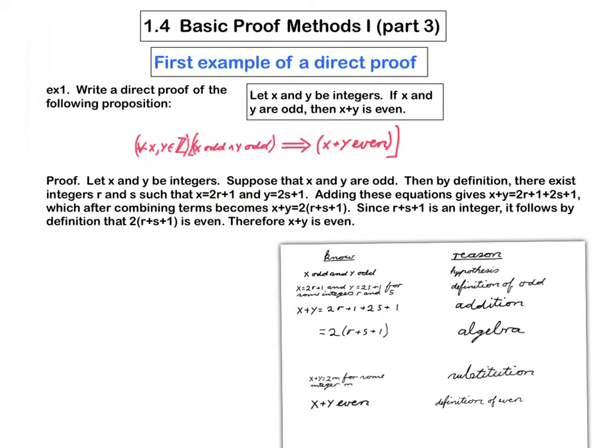When we get to much more complicated examples, we may not, we probably won't be using this table, but we're always going to make use of this step here, of writing the original statement in symbols. We're going to find that step extremely useful in writing up proofs.